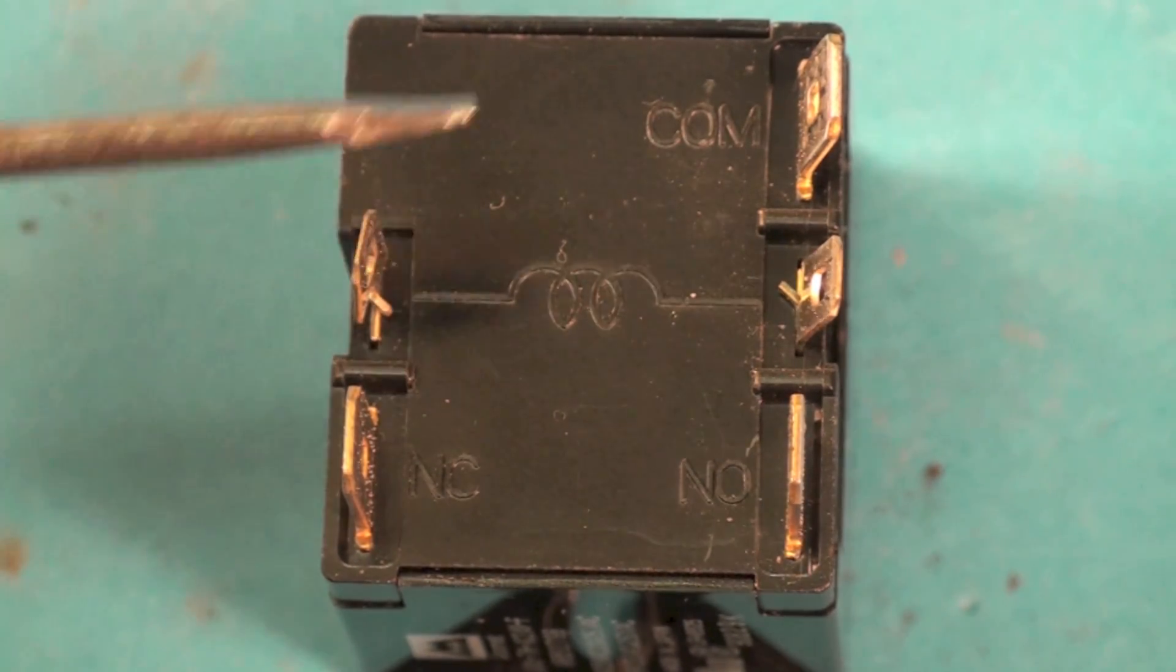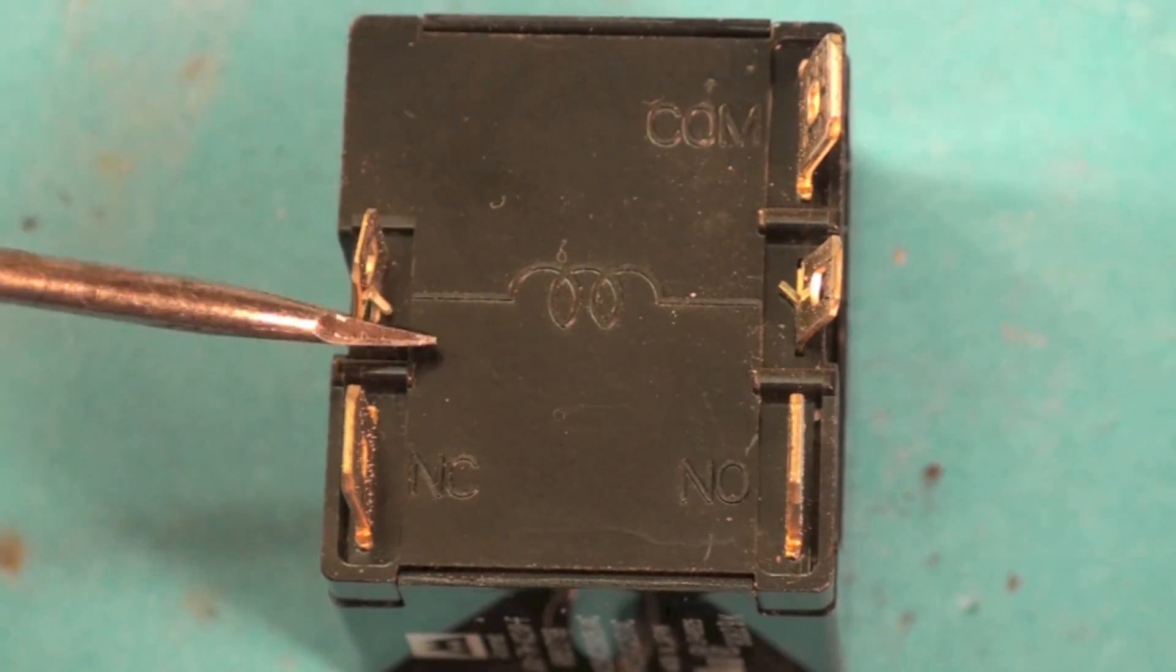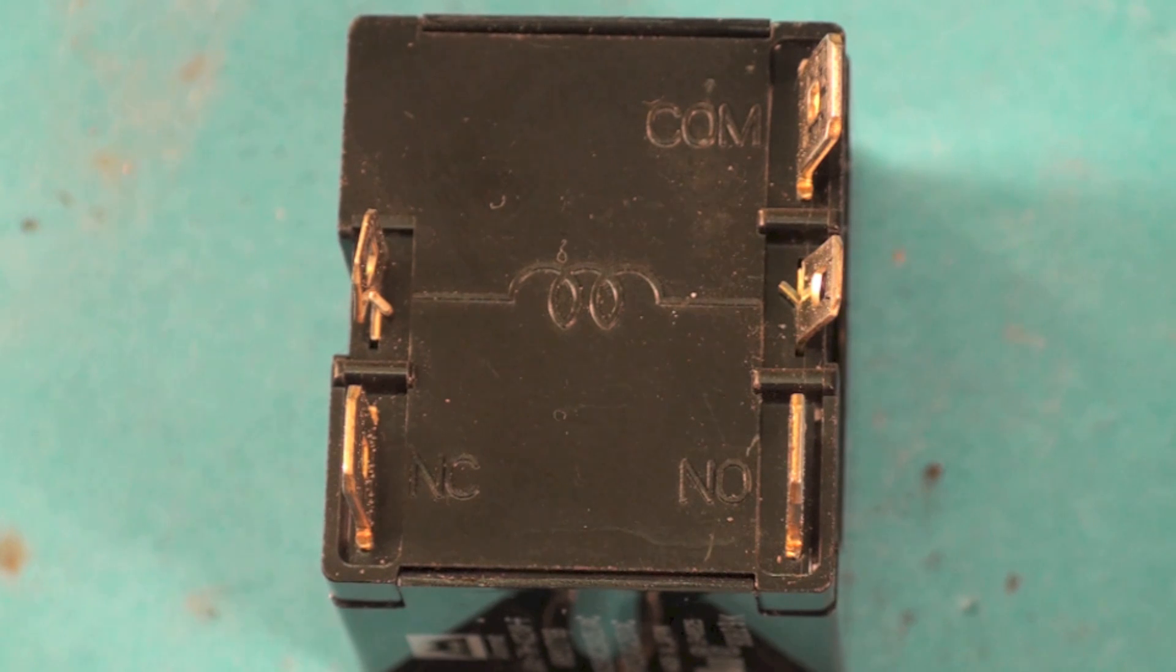Okay, between these two terminals here you can see a squiggly. That squiggly is the coil that energizes to move the contacts back and forth. Up here I have COM for common, and I've got NC for normally closed, NC for normally open.